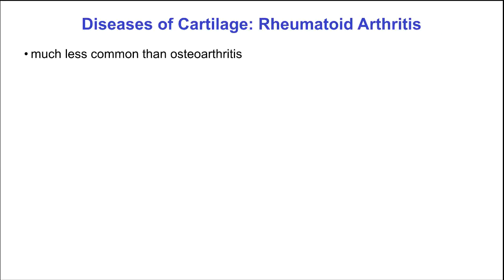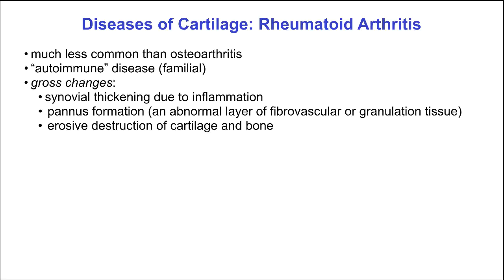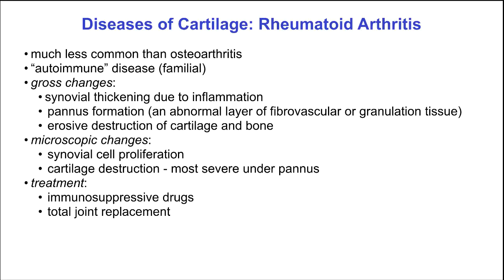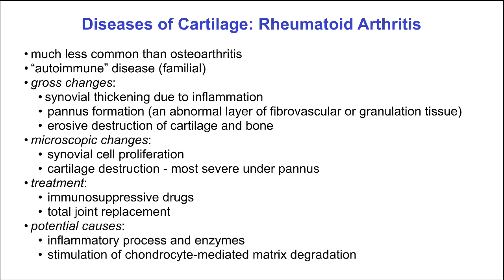A less common type of arthritis is rheumatoid arthritis. It is an autoimmune disease that tends to be inherited. Gross changes include synovial thickening due to inflammation, the formation of pannus, which is an abnormal layer of fibrovascular or granulation tissue, and erosive destruction of cartilage and bone. Microscopic changes include synovial cell proliferation and cartilage destruction, especially under the pannus layer. Treatments include immunosuppressive drugs or, when more severe, total joint replacement. Potential causes include inflammatory processes and enzymes and stimulation of chondrocyte-mediated matrix degradation.